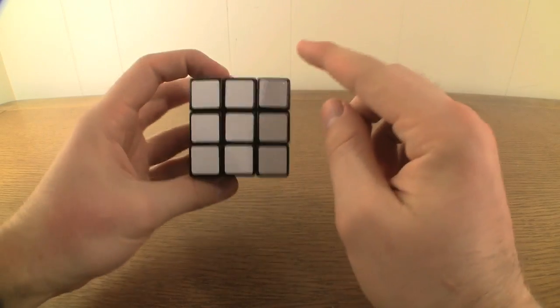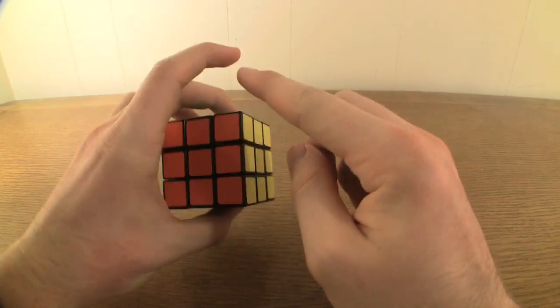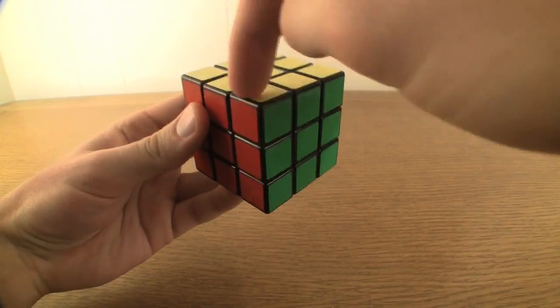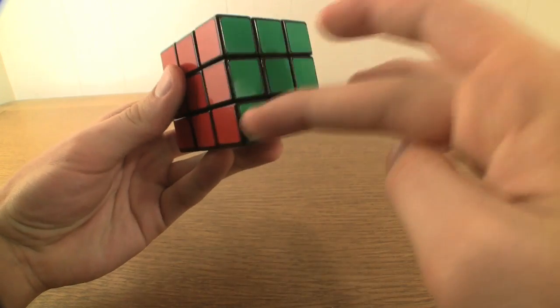There are eight corner cubelets, whose names pretty much speak for themselves. Each corner piece has three colors and can move to occupy any of the eight different corner locations.